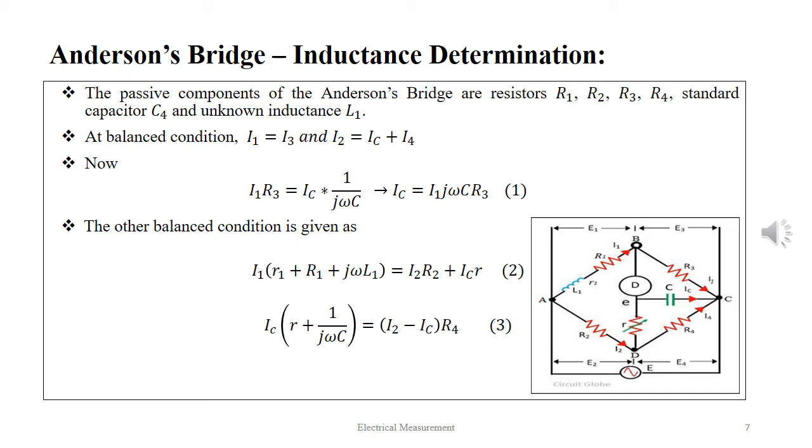The other balanced condition: I1 into small r1 plus capital R1 plus J omega L1 equal to I2 R2 plus IC R.